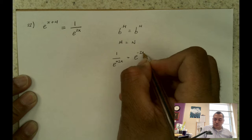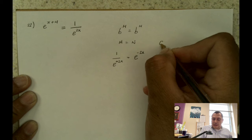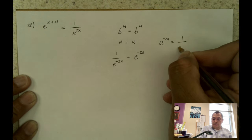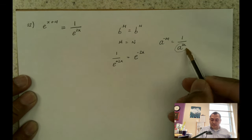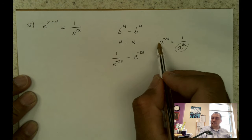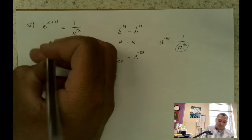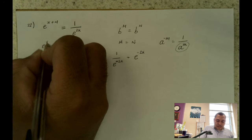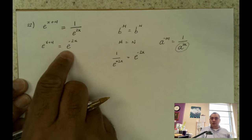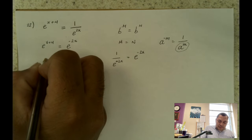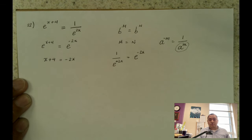Remember the property of exponents that says a to the negative m equals to 1 over a to the m. We are just reversing that formula. So I have 1 over e to the 2x sent to the numerator as e to the negative 2x. So I can rewrite this as e to the x plus 4 equals to e to the negative 2x. The bases are the same, so I just set the exponents equal: x plus 4 equals to negative 2x.